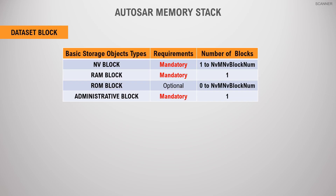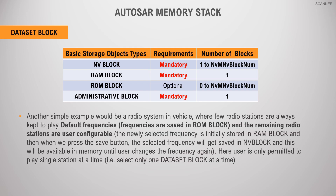The basic requirements of a dataset block are as follows: when we configure a memory block with block management type as dataset block, it must have one NV block, one RAM block, one administration block, and an optional ROM block. The maximum number of configurable NV blocks and ROM blocks can also be defined while configuring the dataset block with the parameter NVM NV block number. A simple example would be a radio system in a vehicle.